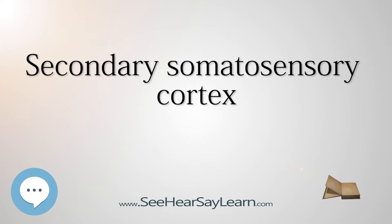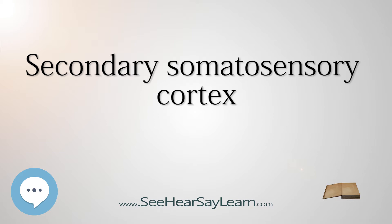Areas PV and S2 both map the body surface. Functional neuroimaging in humans has revealed that in areas PV and S2, the face is represented near the entrance to the lateral sulcus, and the hands and feet deeper in the fissure.